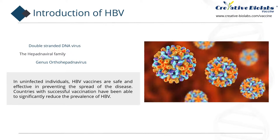The current guidelines recommend high-risk populations for chronic HBV infection screening, so that diagnosed individuals can carry out proper hepatitis care. The vast majority of infected individuals without treatment will have risks for cirrhosis, liver failure, and hepatocellular carcinoma. In uninfected individuals, HBV vaccines are safe and effective in preventing the spread of the disease. Countries with successful vaccination have been able to significantly reduce the prevalence of HBV.